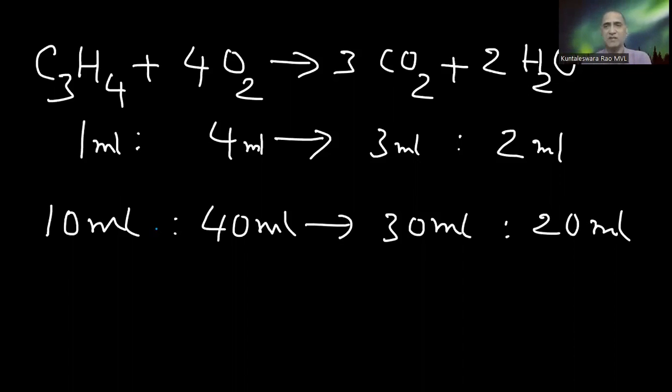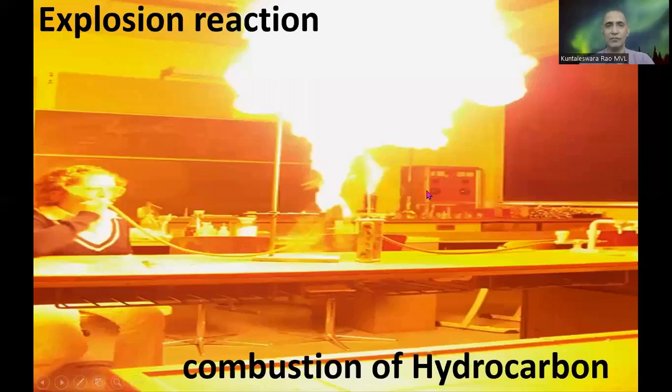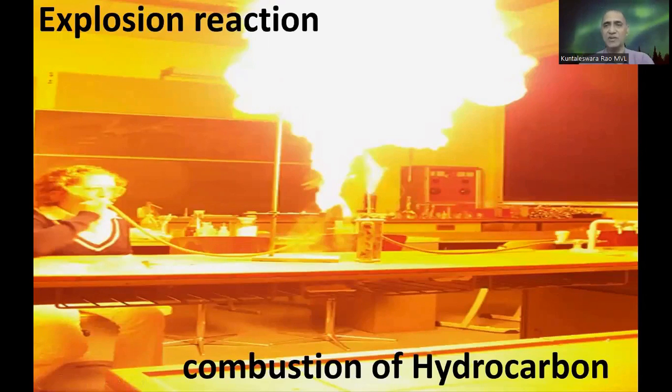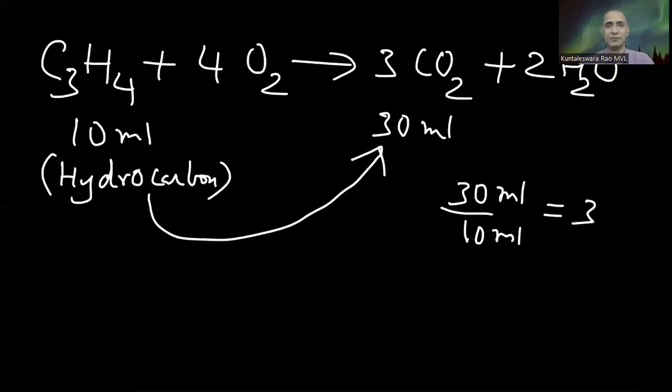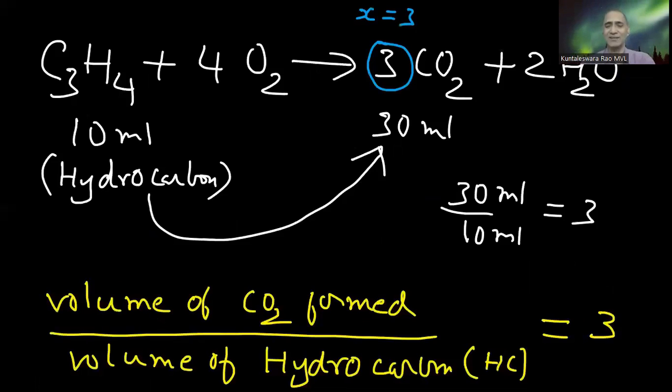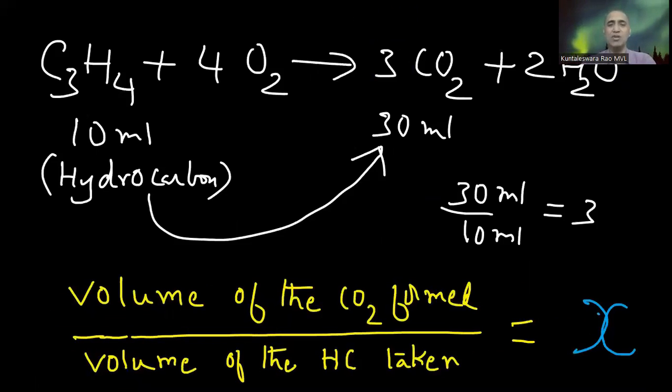Volume ratio is always equal to mole ratio. If you take 10 ml of propane, it reacts with 40 ml of oxygen to form 30 ml of carbon dioxide, 20 ml of steam. It is an explosive reaction. So H2O is in the form of steam. 10 ml of hydrocarbon gives 30 ml of carbon dioxide. Take 30 ml by 10 ml, we get 3. That is equal to X.